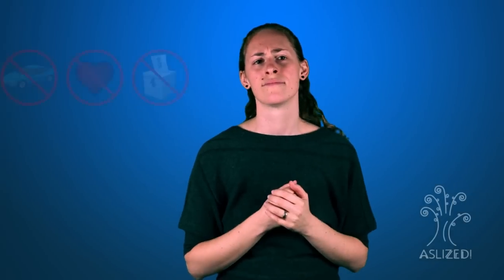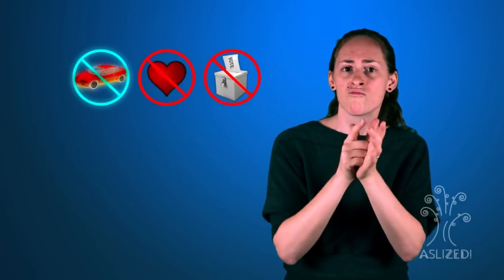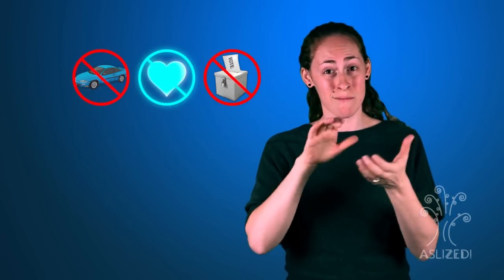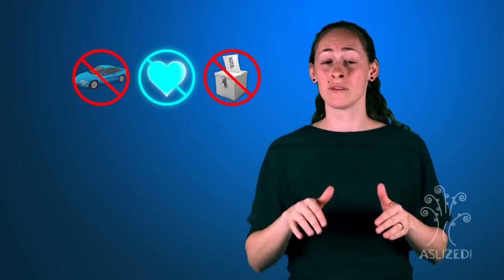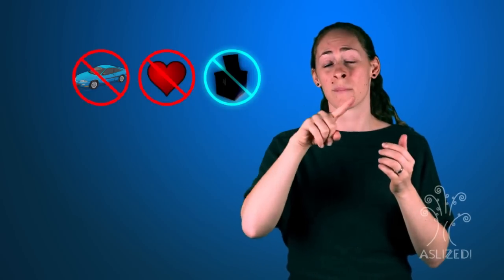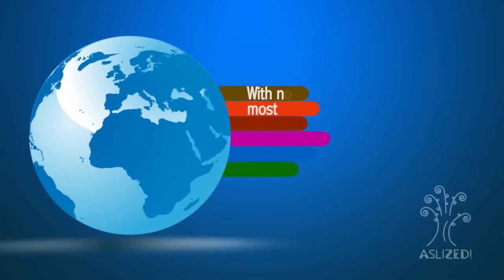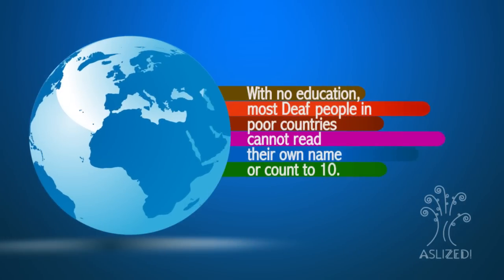They have no knowledge of global or local events and are constantly behind in current news. Many of them are unemployed and very poor. Some nations do not allow deaf people to drive. A few have made it illegal for a deaf person to marry another deaf person or raise children. And some countries do not allow deaf people to vote.